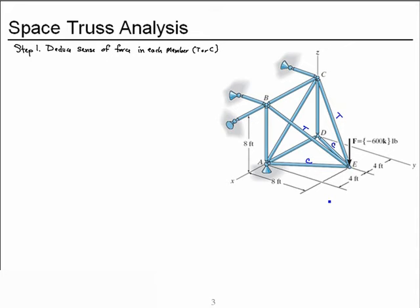Now let's come up to C. BC, AC, and CD are all in the XZ plane. So if CE is pulling out of that plane because it's in tension, that means this link has to be in tension, or pulling back in the negative Y direction. Likewise, here at B, this link has to be in tension, pulling back that way, because it's the only thing in the Y direction to balance out the tension force we predict in member BE.